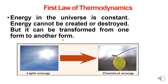For example, plants perform photosynthesis. Plants use light energy, along with water, carbon dioxide and chlorophyll. The product formed is starch, which is a form of chemical energy. So here, one form of energy is converted into another form — light energy is converted into chemical energy.